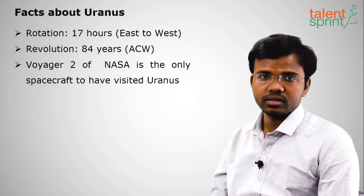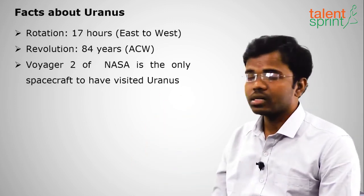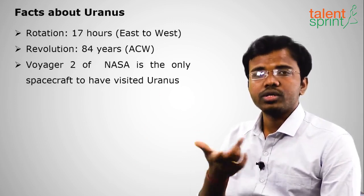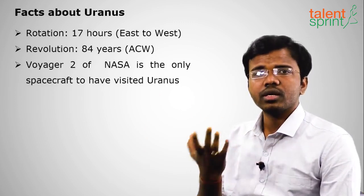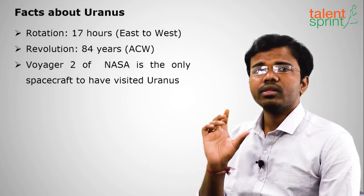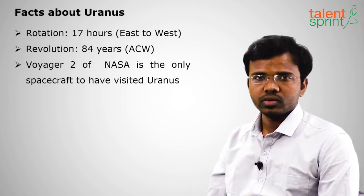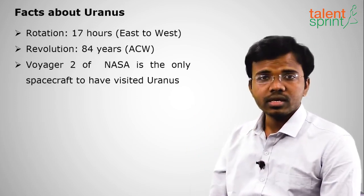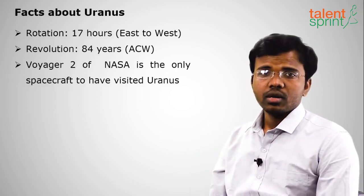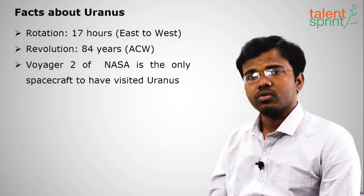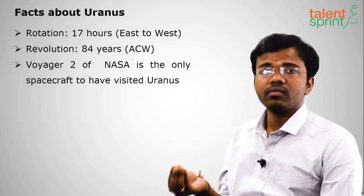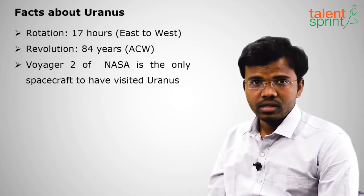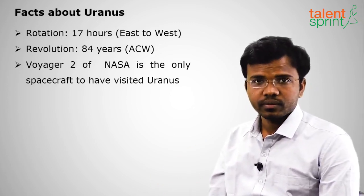In terms of moon count, Jupiter ranks first with 69 moons, Saturn second with 62, and Uranus third with 27. Importantly, Uranus rotates from east to west — like Venus — in retrograde motion. All other planets rotate from west to east. On Venus and Uranus, the sun rises in the west and sets in the east.